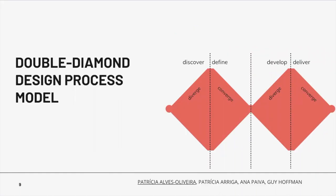To design this robot, we followed the double diamond process model, which consists of four main stages: discover, define, develop, and deliver. It's shaped in the form of two diamonds where the design process fluctuates between moments of divergent and convergent thinking. We will come back to this model later.